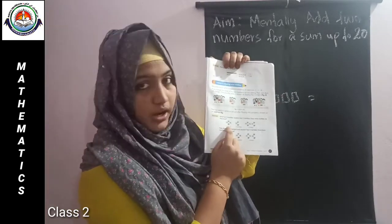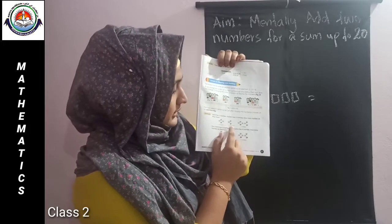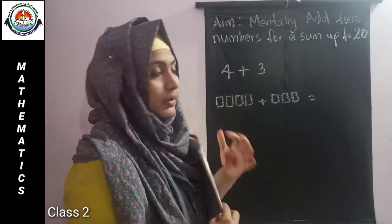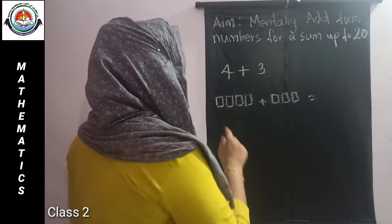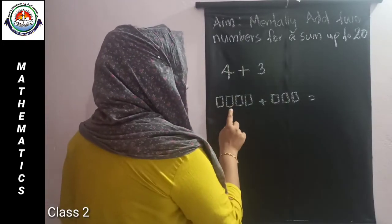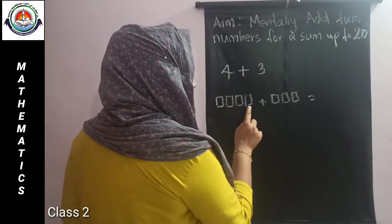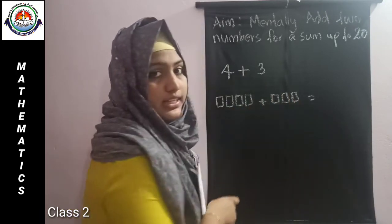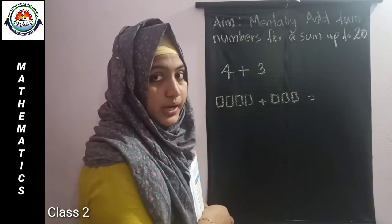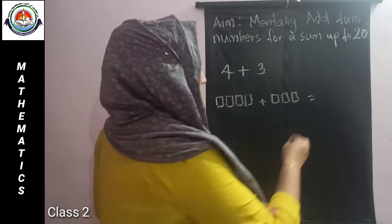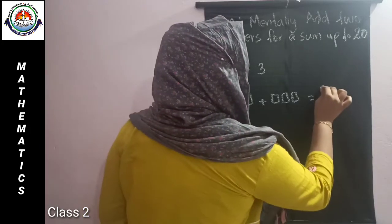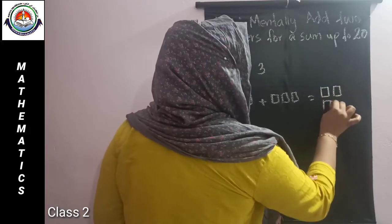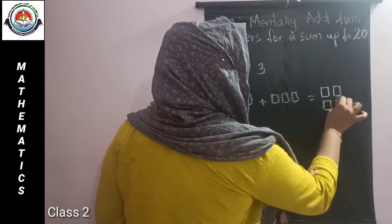4 marbles plus 3 marbles. Then we can count how many marbles there are: 1, 2, 3, 4, 5, 6, 7. So we got 7 marbles total.